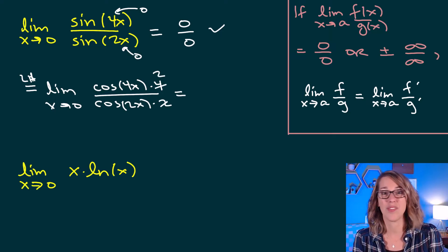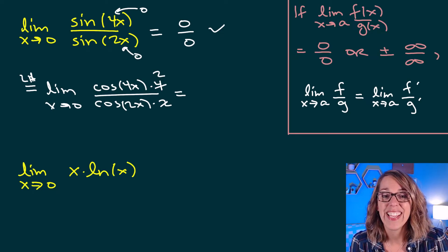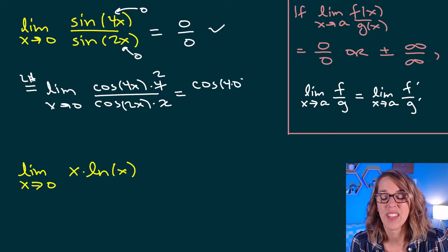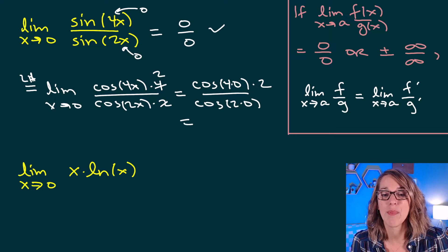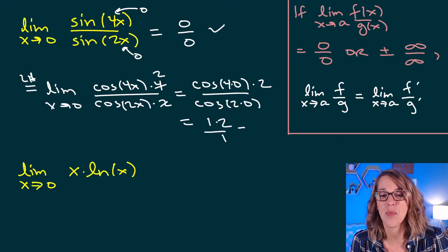Now I do direct substitution and plug in 0. It's defined at 0, so I get cosine of 4 times 0 times 2 on the outside, divided by cosine of 2 times 0. The cosine of 0 goes to 1 in both cases, so I get 1 times 2 over 1, and the limit equals 2.